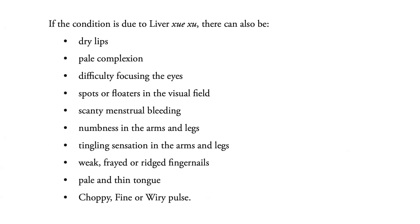Wiry or fine pulse. If the condition is due to liver blood deficiency, there can also be dry lips, pale complexion, difficulty focusing the eyes, spots or floaters in the visual field, scanty menstrual bleeding, numbness in the arms and legs, tingling sensation in the arms and legs, weak, frayed or rigid fingernails, pale and thin tongue, choppy, fine or wiry pulse.